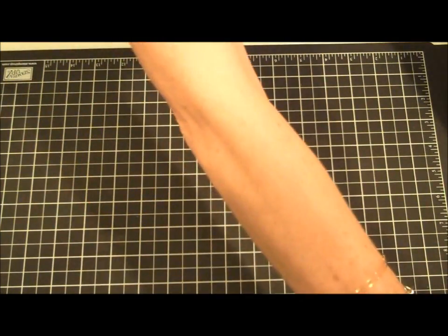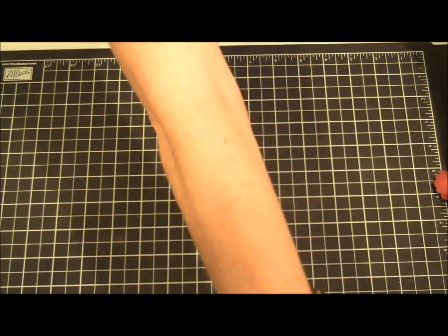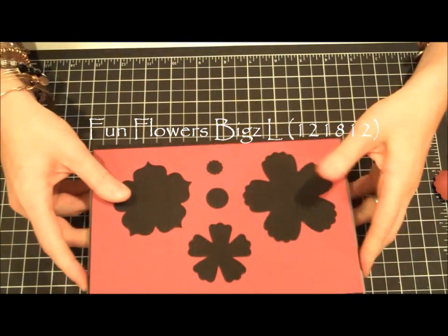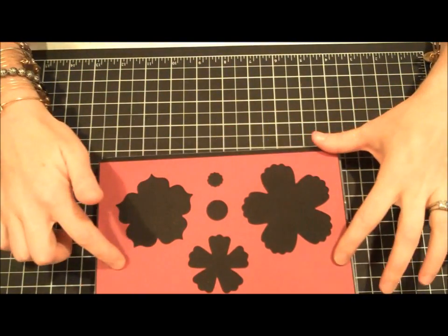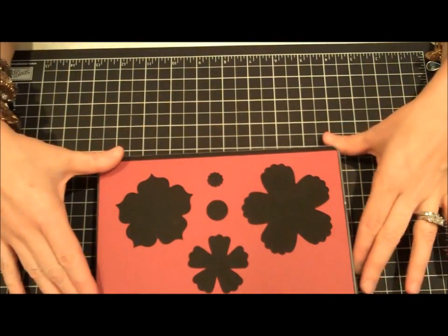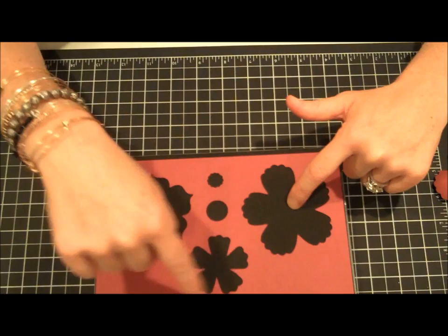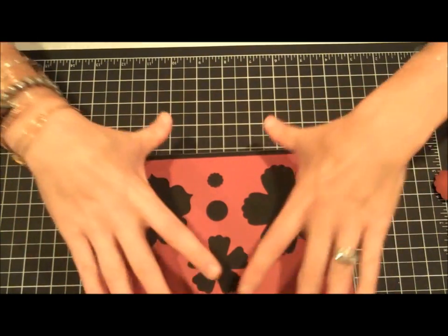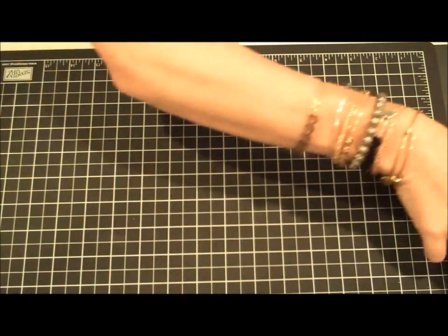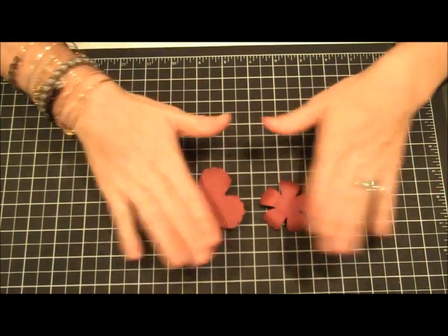The first thing you'll need is your Big Shot die. I used the Fun Flowers Bigz L die. This is the negative image to show you what shapes you get, and for this project I used the two flowers with the scalloped edge. Just ran that through and voila.